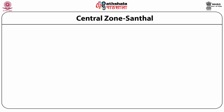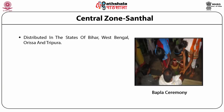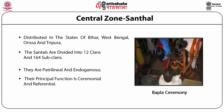In the central zone, the predominant tribe is the Santal — the third largest tribal community of India, with a population of approximately 4,206,842. They are distributed in the states of Bihar, West Bengal, Odisha, and Tripura. Santals are divided into 12 clans and 164 sub-clans. They are patrilineal and endogamous. Their principal function is ceremonial and referential. The clans are ranked according to old functional divisions — the Kisku kings, the Murmu priests, etc. There is a ban on intermarriage between certain clans.